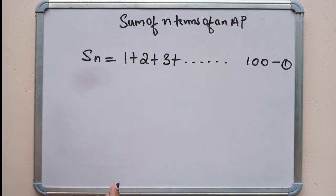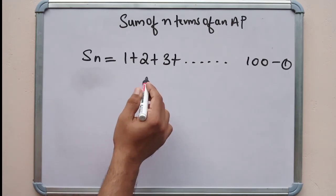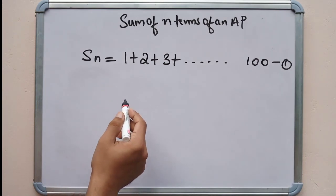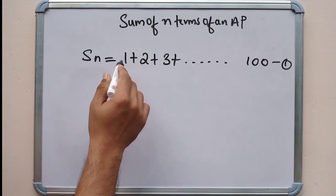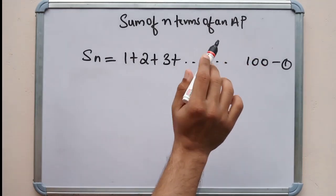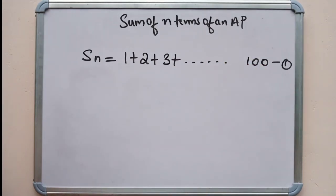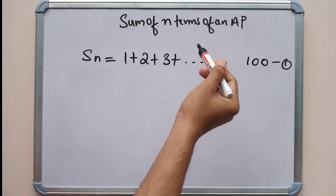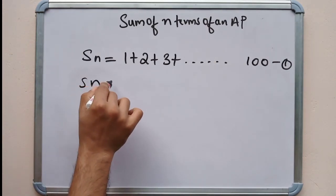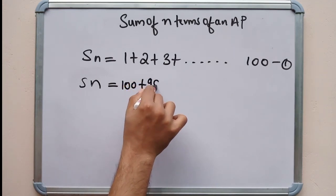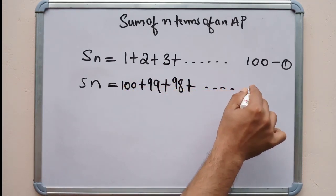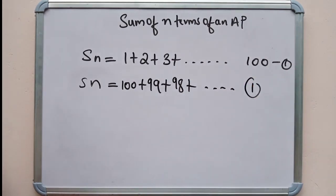We can write it in descending order — that is, in reverse order. So Sn is equal to 100 plus 99 plus 98 plus ... down to 1.